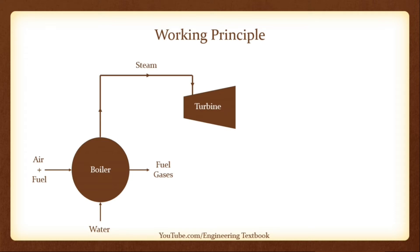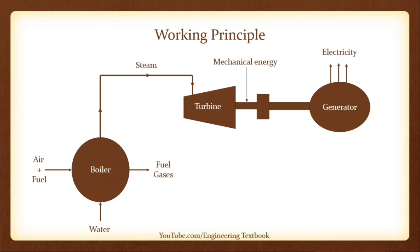Steam Turbine. High-pressure, high-temperature steam produced in the boiler is sent to the steam turbine. At the inlet of the turbine, a nozzle is provided. While passing through the nozzle, the pressure energy of steam is converted into kinetic energy and the velocity of steam is increased. High-velocity steam jets issued from the nozzle strike over the blades mounted on the rotor of the steam turbine. Electric Generator. The output shaft of the steam turbine is coupled to the shaft of an electric generator, which converts mechanical energy into electrical energy.